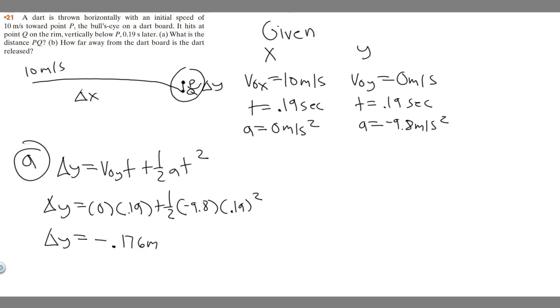That's going to be our change in Y. But it's asking for the distance, and distance can't be negative. The change in Y from P to Q is minus that, so take the magnitude. It's just the positive version of this, which is 0.176 meters. That's your answer to A.